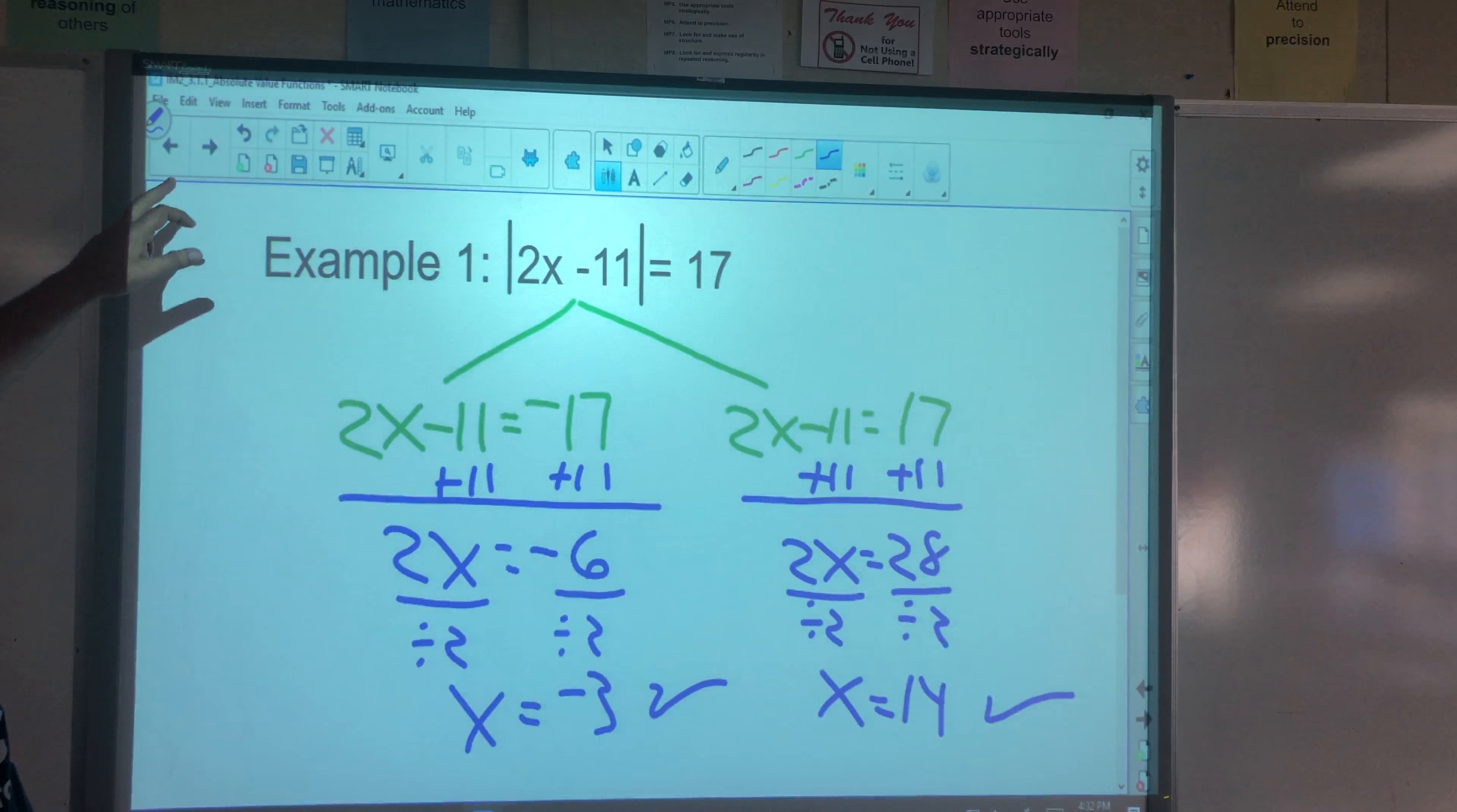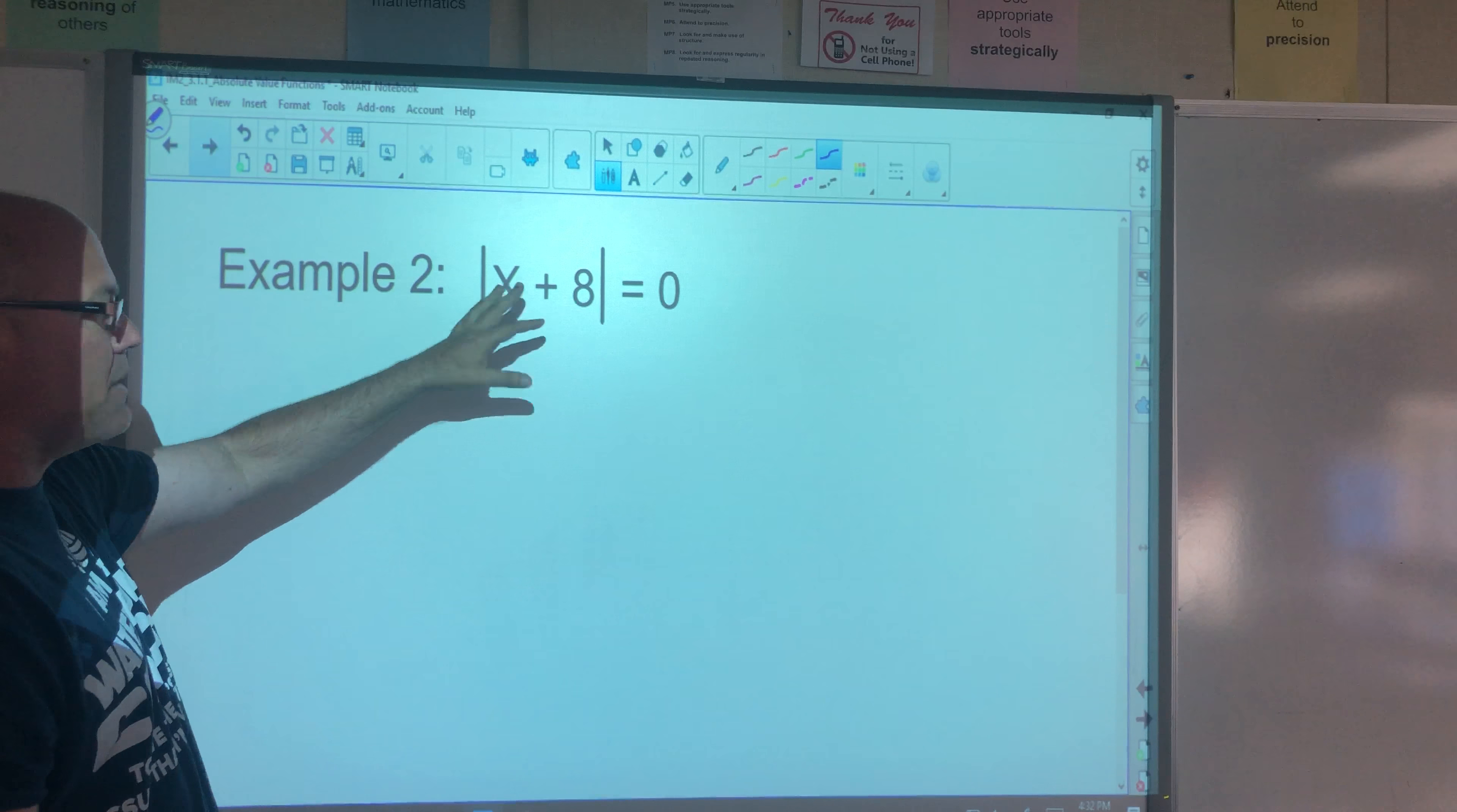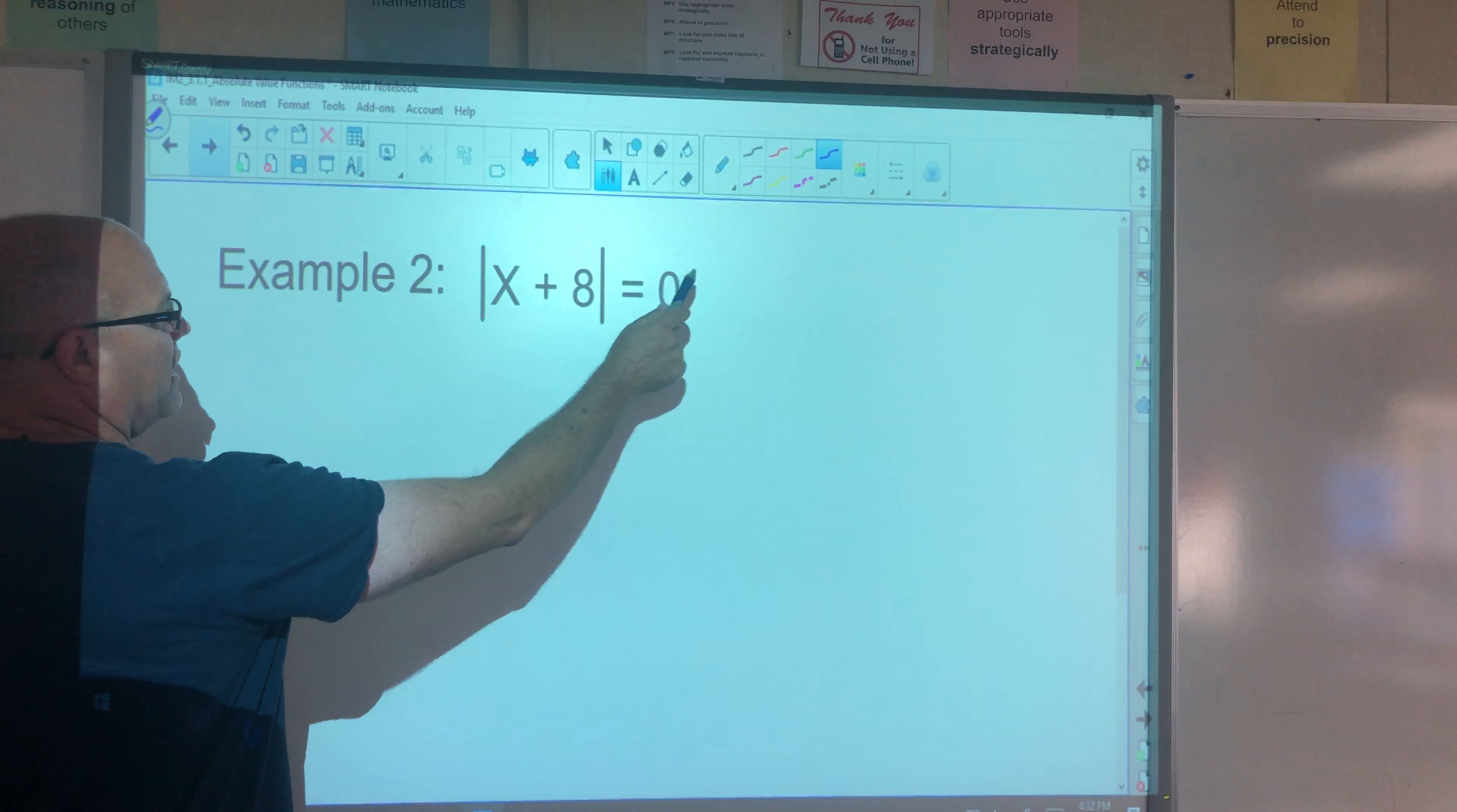Example two. Absolute value of x plus 8 equals 0. So this is a special case. The lowest the value could be inside absolute value bars, not inside the absolute value bars, but the lowest value you can get from absolute value is 0, right? You can't get a negative number. So the x could be negative, but you can't get a negative number when you take the absolute value of something.